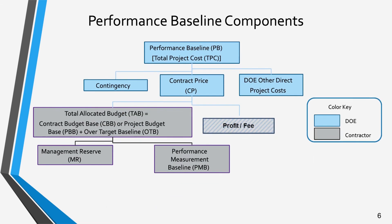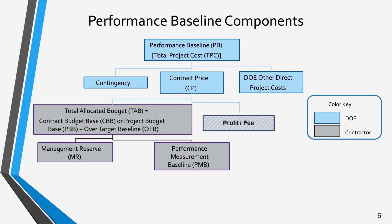The contract price issued to the contractor is comprised of two different components: the profit, or fee, and the total allocated budget, or TAB. The TAB equals the contract budget base unless an over-target baseline has been declared and approved. The contractor then takes the TAB, or CBB, or PBB when no OTB exists, and breaks it down into Management Reserve, or MR, and the Performance Measurement Baseline, or PMB.